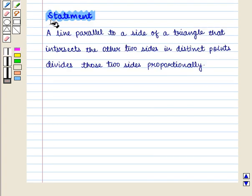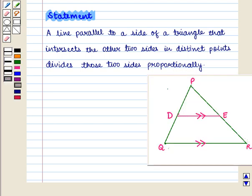Now statement of side splitting theorem says, a line parallel to a side of a triangle that intersects the other two sides in distinct points divides those two sides proportionally.